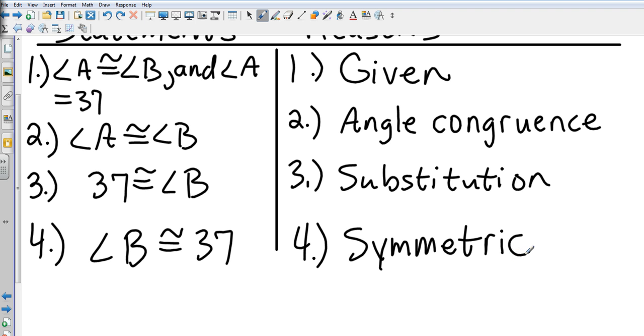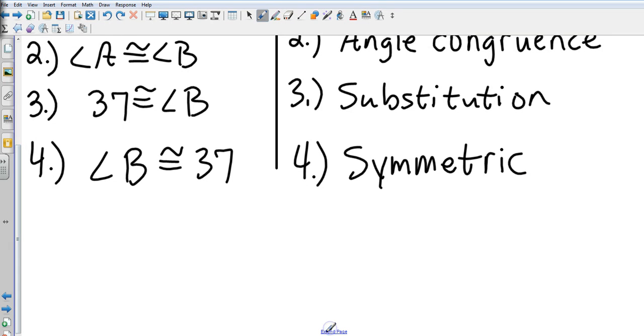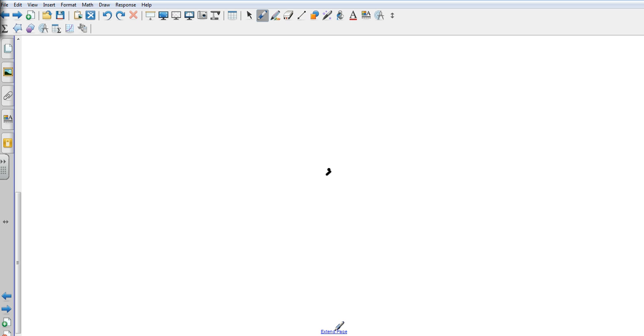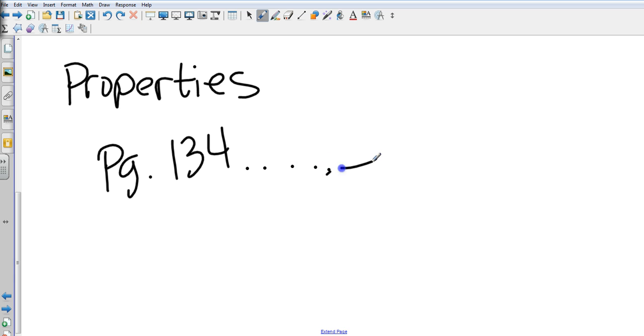All of the properties—symmetric, substitution, reflexive, transitive—we've gone over those before, but you'll find those on page 134. Key properties are found starting on page 134. That is algebraic proofs, and that should do it for Chapter 2, Section 6.